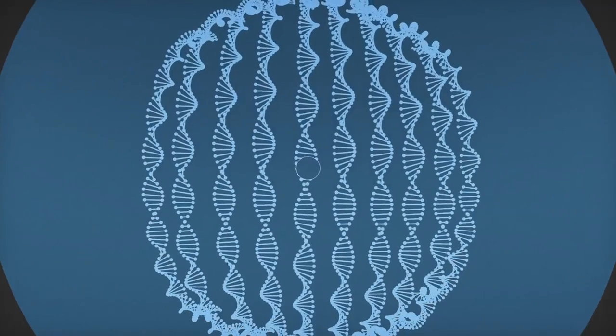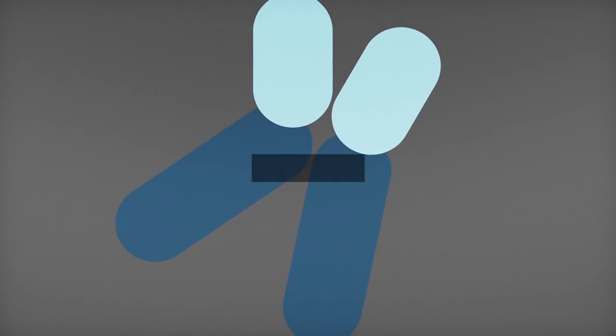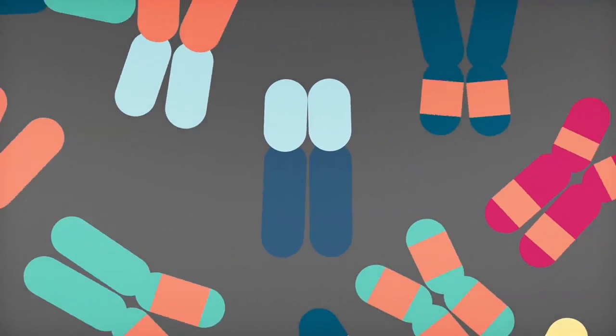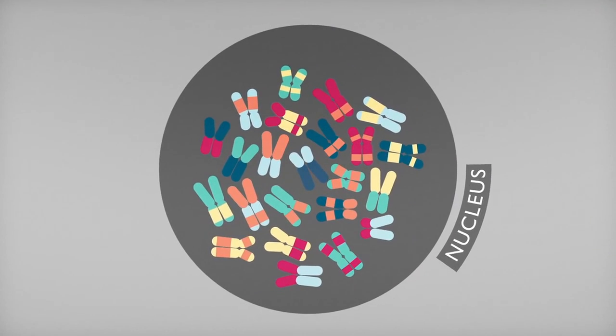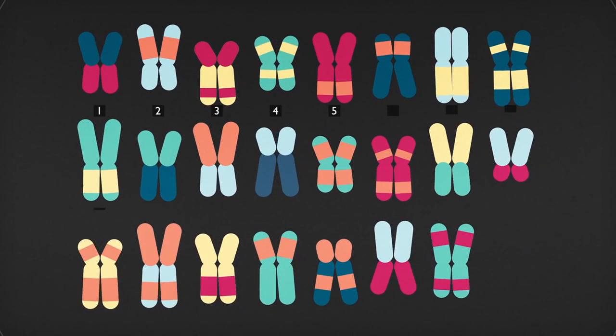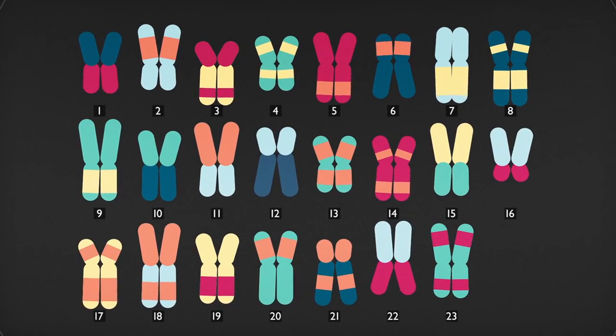DNA folds into paired packages called chromosomes that are stored in the nucleus of the cell. Different species have different numbers of chromosomes. Humans have 23 pairs.